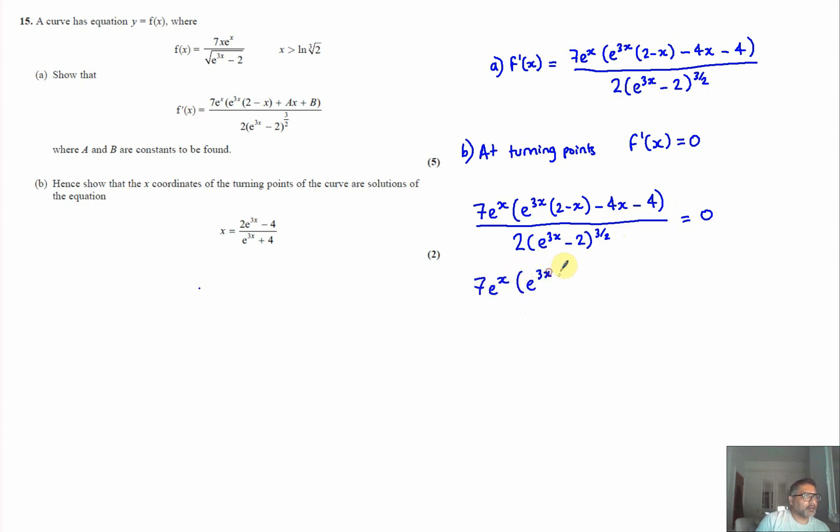times e to the three x times two minus x minus four times x minus four equals zero. Now to solve this, it's the same principle you use when you're solving a quadratic. If you've got two things that are multiplying together to make zero, that means either this equals zero, so either seven e to the x is equal to zero, which is invalid,